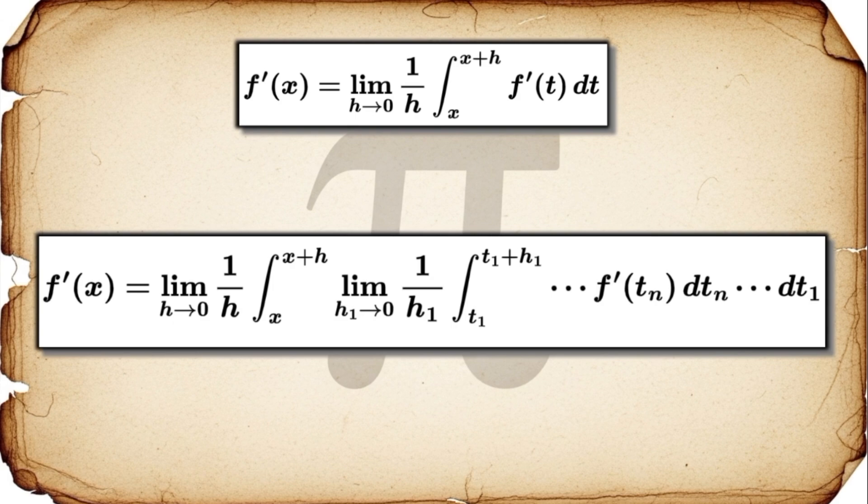Look at this. This equation shows exactly what I mean. The derivative, f prime, is the infinitesimal average of itself. But that itself inside the integral can also be replaced by its own definition, which is an average of an average. And you can do this forever. It creates this beautiful, almost fractal-like structure of nested averages, an infinite chain that somehow still collapses down to one single, well-defined value. It's amazing.